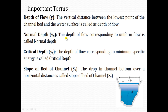The next term is normal depth, denoted as Yn. The depth of flow corresponding to uniform flow is called normal depth. In a channel where flow is uniform, the corresponding depth of flow will be the normal depth. The third term is critical depth, denoted as Yc. The depth of flow corresponding to minimum specific energy is called critical depth.